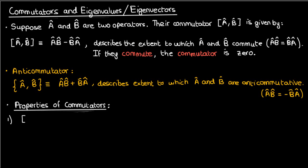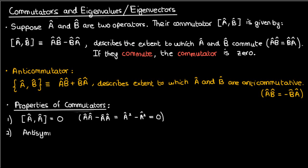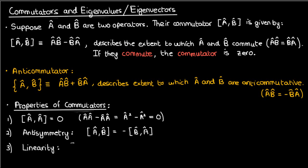The first property is that the commutator of a-hat with itself is zero, which is obvious since a-hat squared minus a-hat squared is zero. The second property is anti-symmetry, which is also relatively obvious from the definition of commutators. All it says is that if you switch the order of the commutation — from the commutator of a-hat and b-hat to the commutator of b-hat and a-hat — you'll get the opposite result. The third property is linearity, so the commutator is a linear operation.